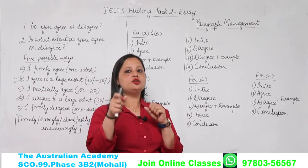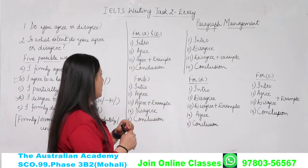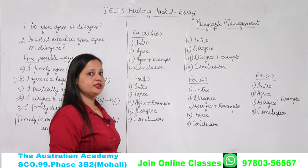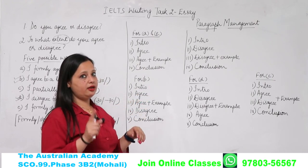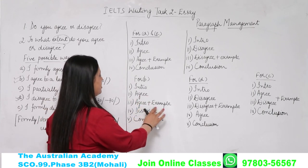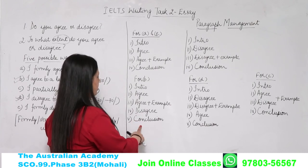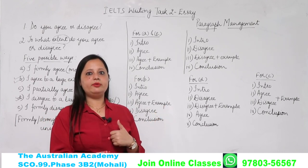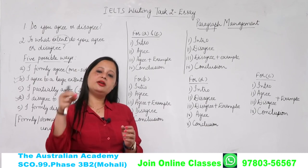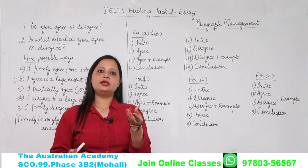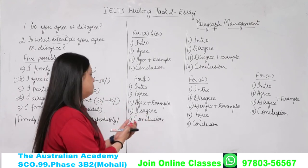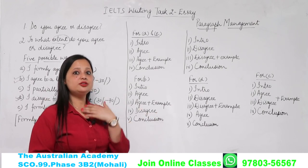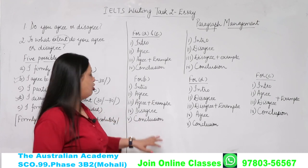Next aata hai agar aapne large extent agree karna hai — B. Agar aap large extent agree karenge tab: first paragraph introduction, second aur third mein agree karna hai, uska example denge, fourth mein disagree karna hai, aur conclusion. Ek cheez yeh hai ki example jo dena hai — make sure example usme do jiske liye aap zyada paragraph bana rahe ho. Beech mein example daalna okay hai, lekin jiske baare mein thoda sa likh rahe ho usme example daalna sahi nahi hai. Toh do paragraph agree, ek disagree, conclusion. Aur disagree bhi again mera hi opinion hai — agree bhi mera hai, disagree bhi mera hai.